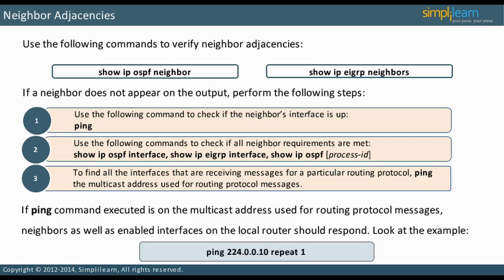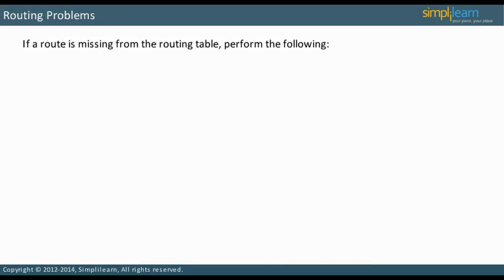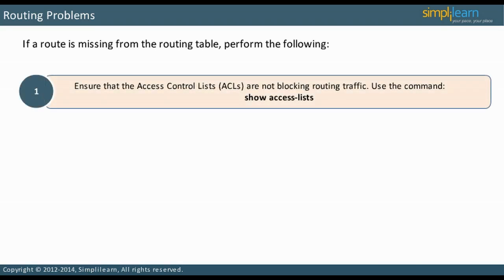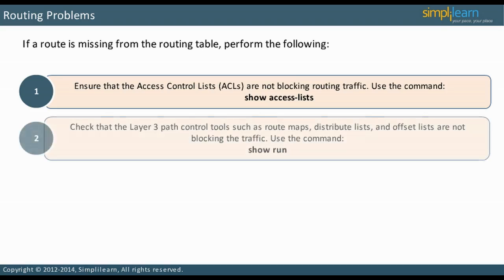Let us focus on troubleshooting routing problems. If a route is missing from the routing table, there are some items to check. Ensure there are no ACLs blocking the routing traffic by issuing the Show Access Lists command. Check if Layer 3 path control tools are being used. Route maps, Distribute Lists, and Offset Lists can also block traffic.